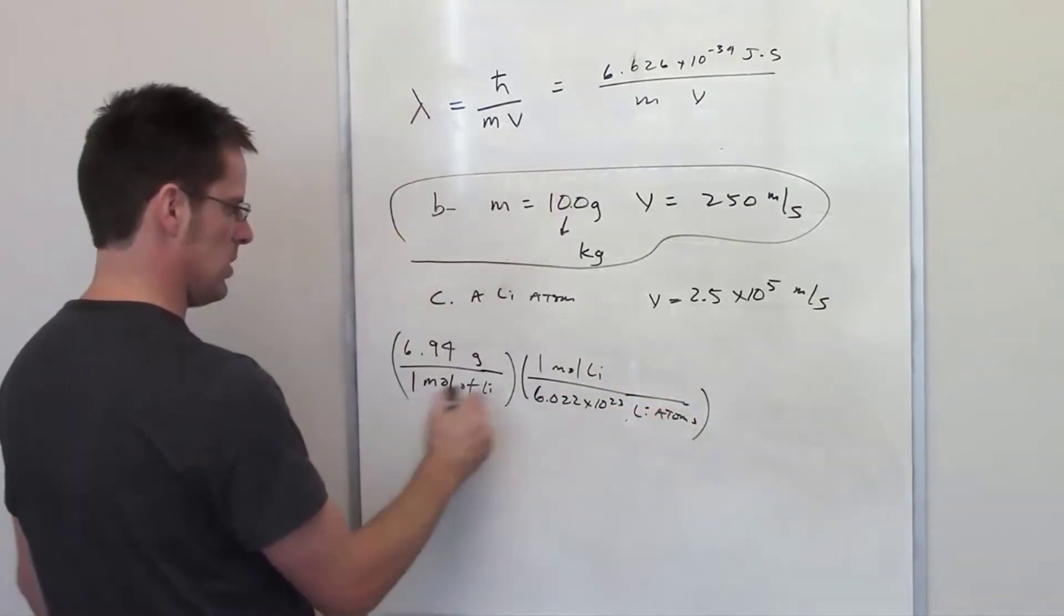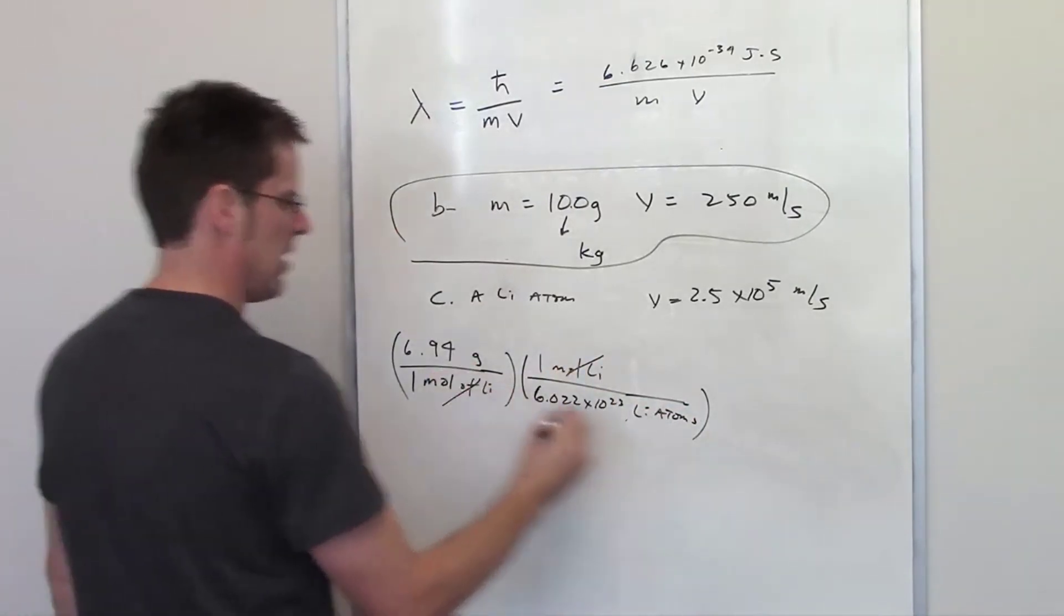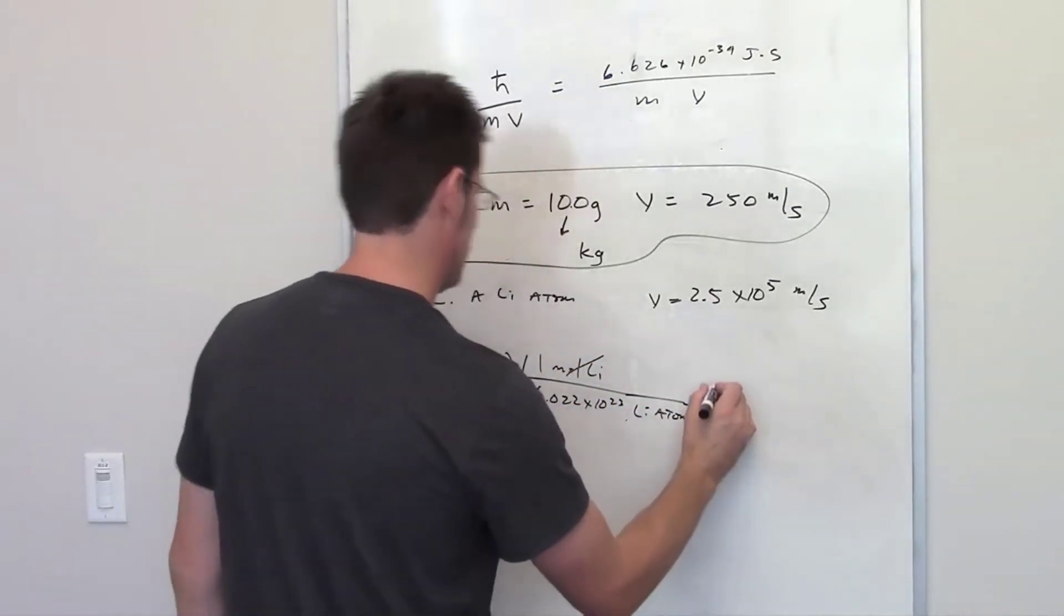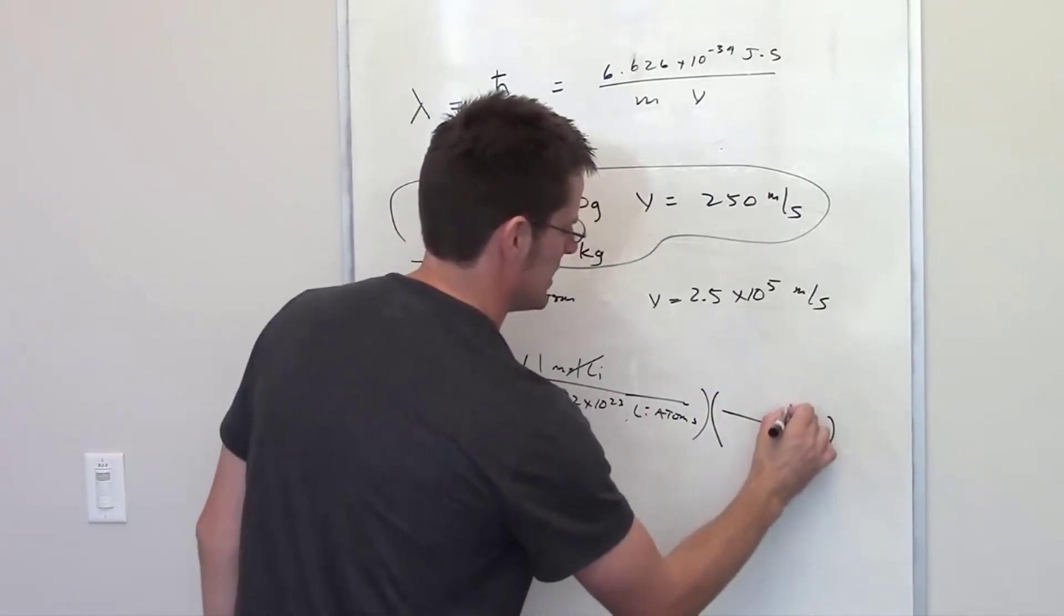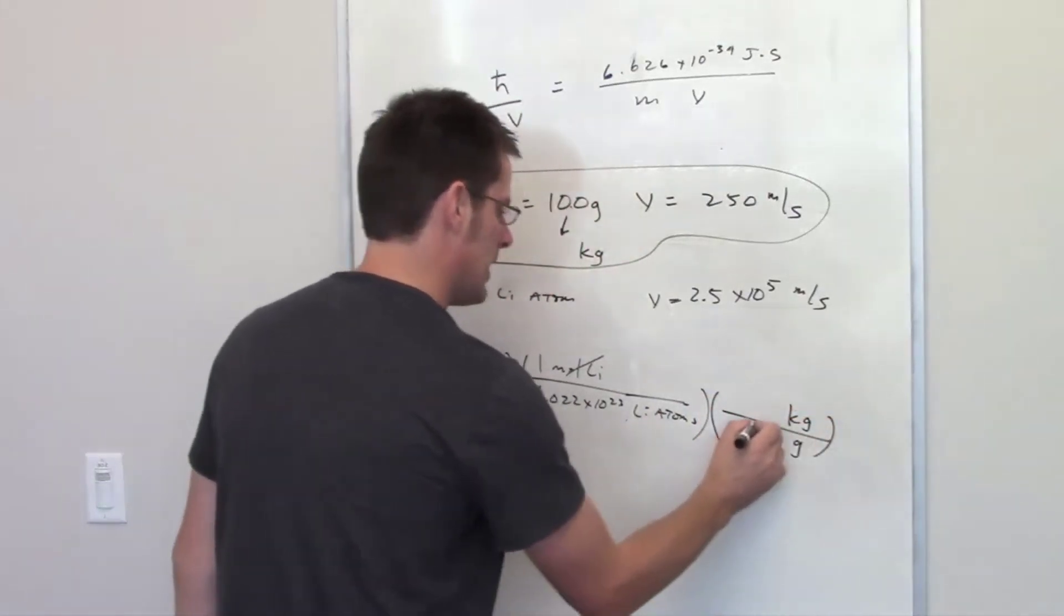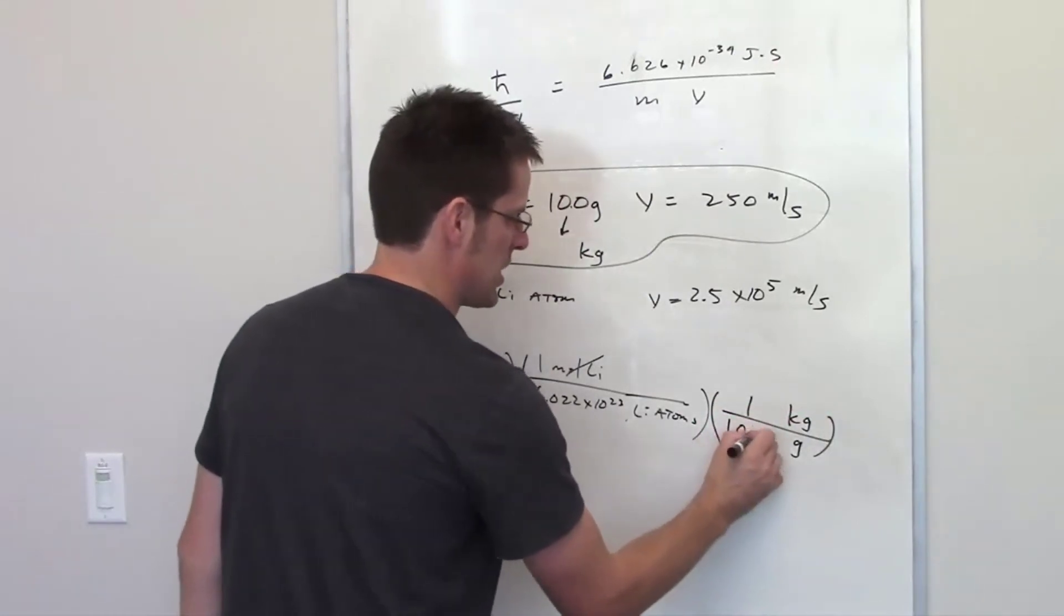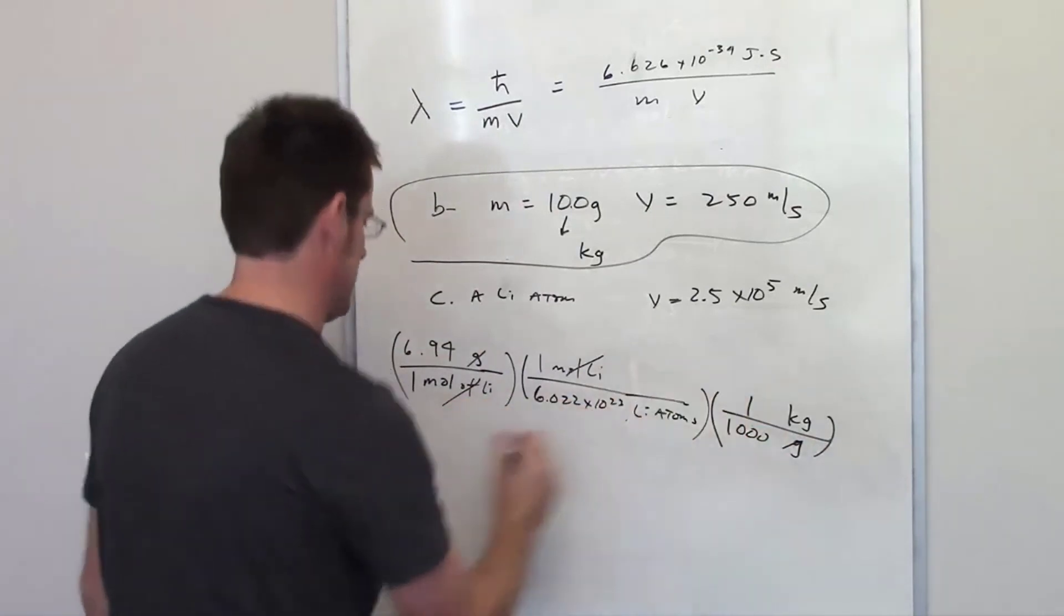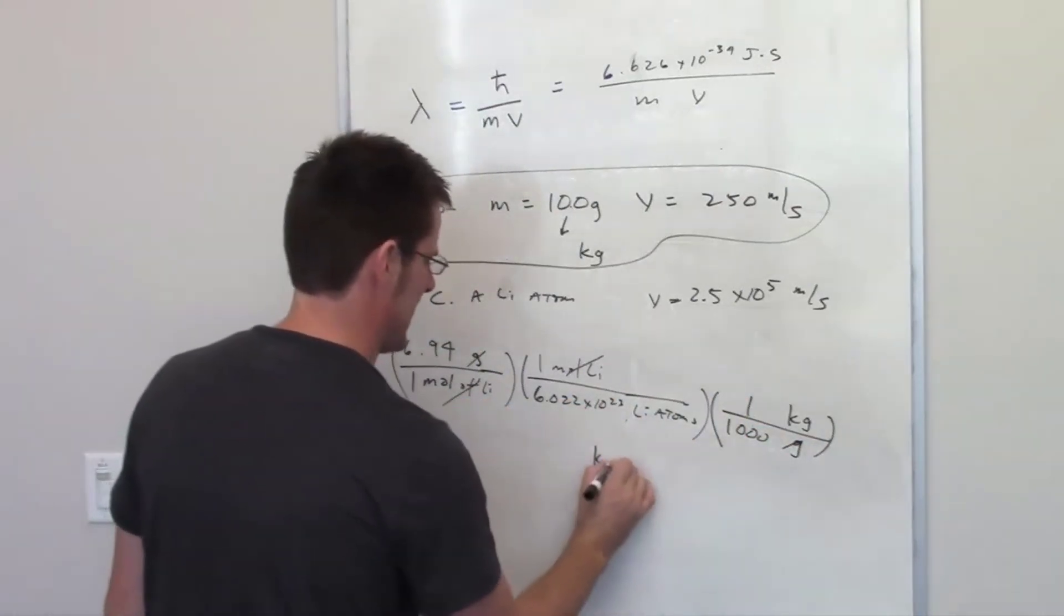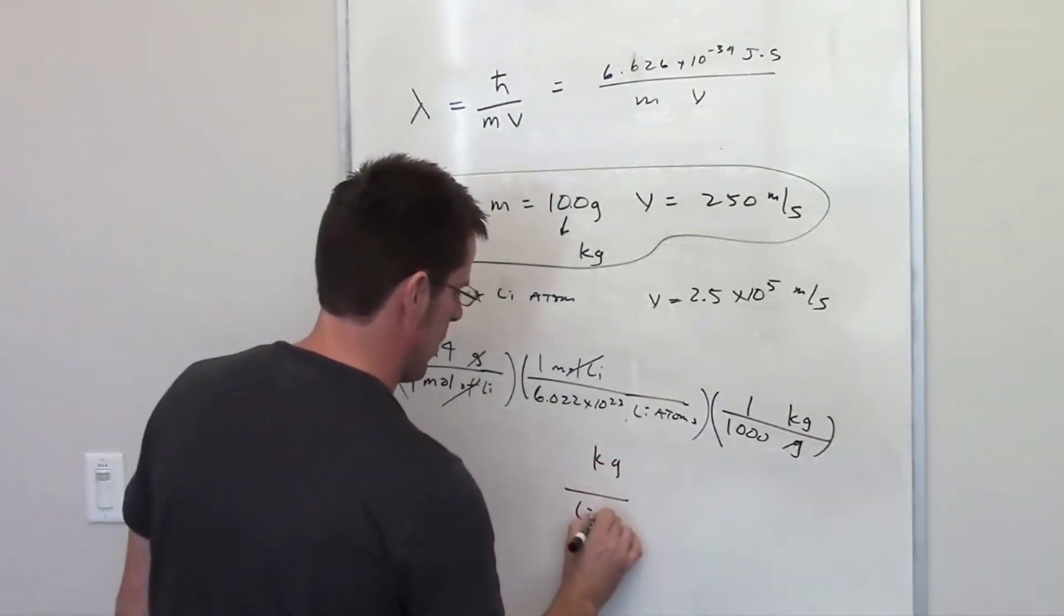I'm going to convert to my SI units. I've got grams in the denominator and kilograms in the numerator. One kilogram contains 1000 grams. So if I plug and chug with this, it should tell me how many kilograms an individual lithium atom weighs.